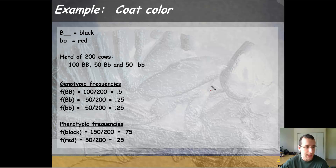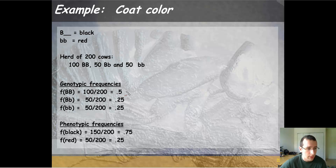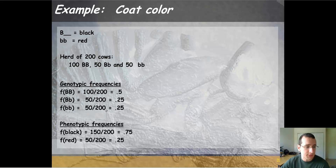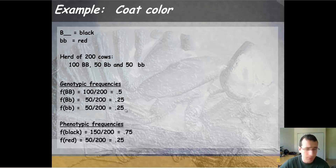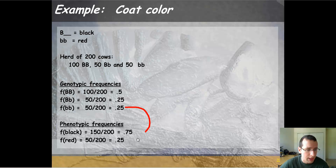The genotype frequencies will be the total number of that particular genotype divided by the total number of members of the population. The population is 200 cows, and with 100 homozygous dominant, you're going to have 0.5 or 50% homozygous dominant. Another 25% will be heterozygous since it's 50 out of 200, and the same ratio applies to the homozygous recessive, which also matches the phenotype frequency for the recessive — because there's only one way of looking recessive.